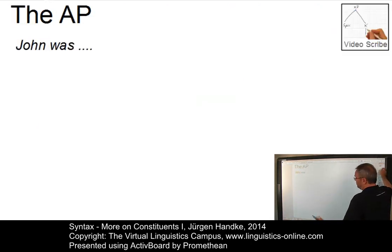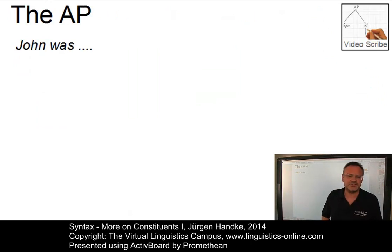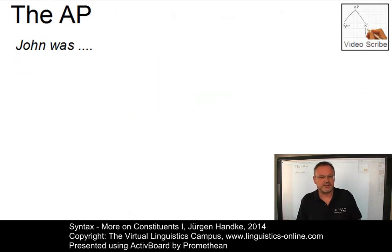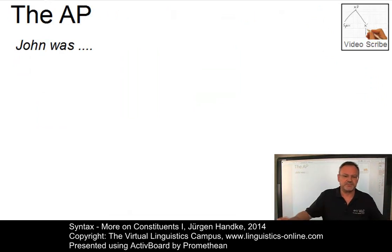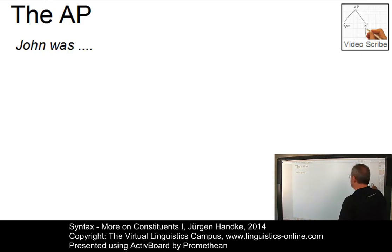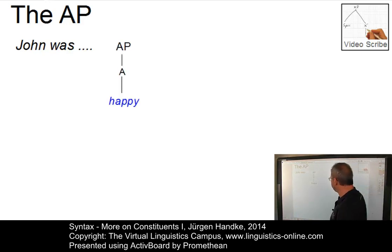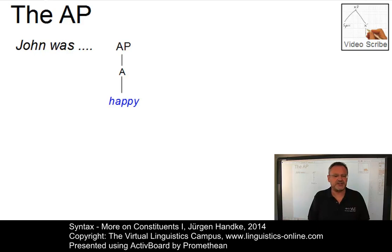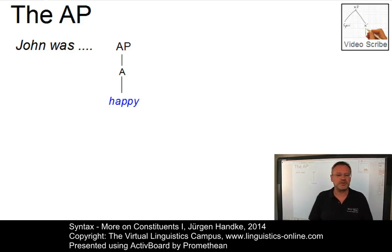Here is the adjective, or more precisely, the adjectival phrase — that is, an adjective or something more — in a sentence such as 'John was...' and then we add, for example, a simple adjective, as in 'John was happy.' This simple adjective can be represented as an adjectival phrase with one branch: the adjective.